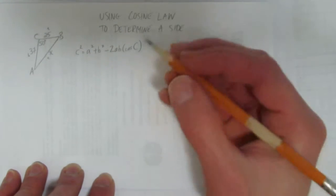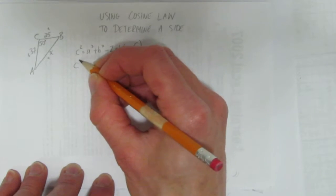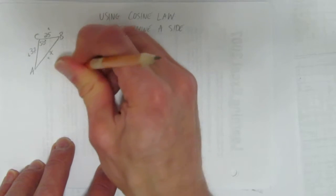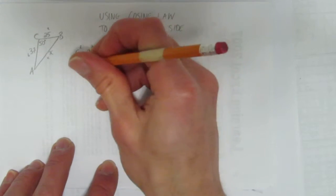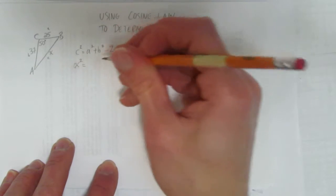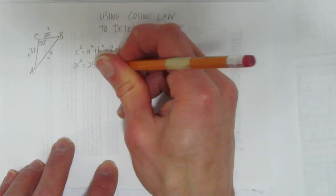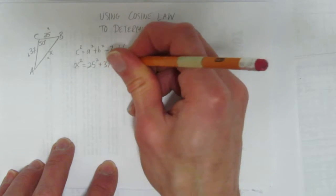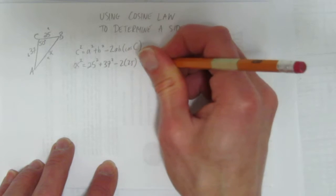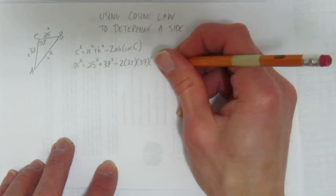First line is the equation, the formula we're going to use. The second line, substitute in. c² which I'm calling x, I better put an x there. Don't have to, could have called it c still, but I called it x. So here's x² = a², that's 25², plus b², that's 37², minus 2 times 25 times 37 times cosine of 50.